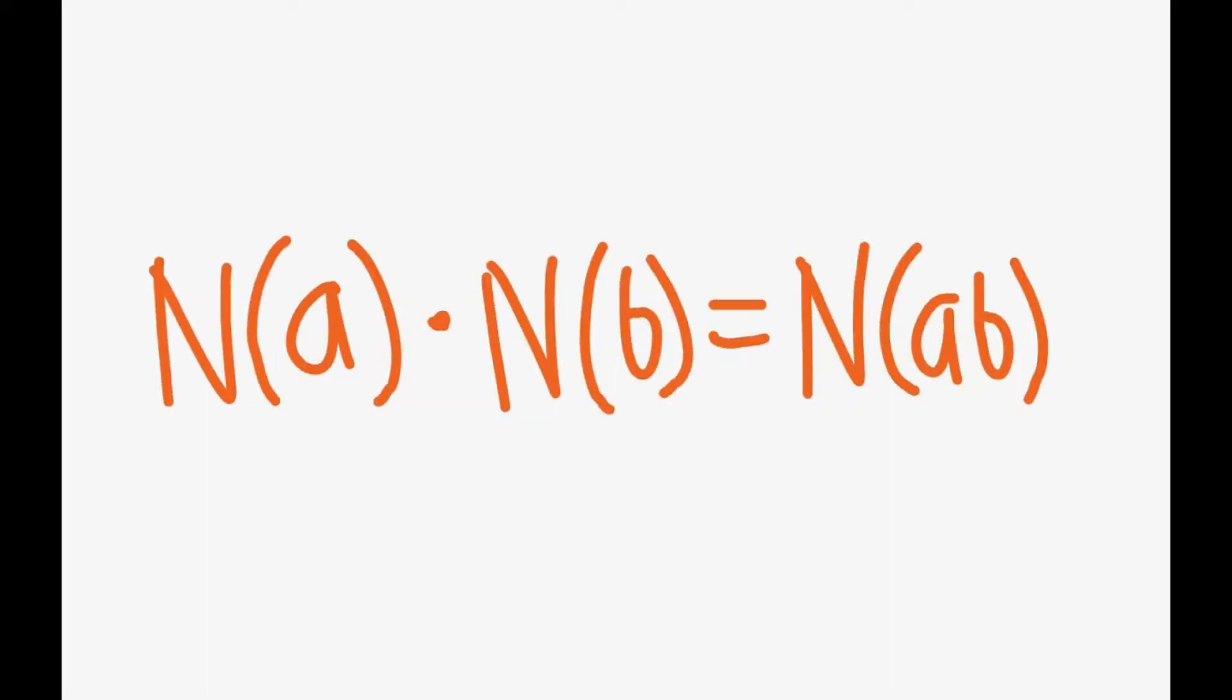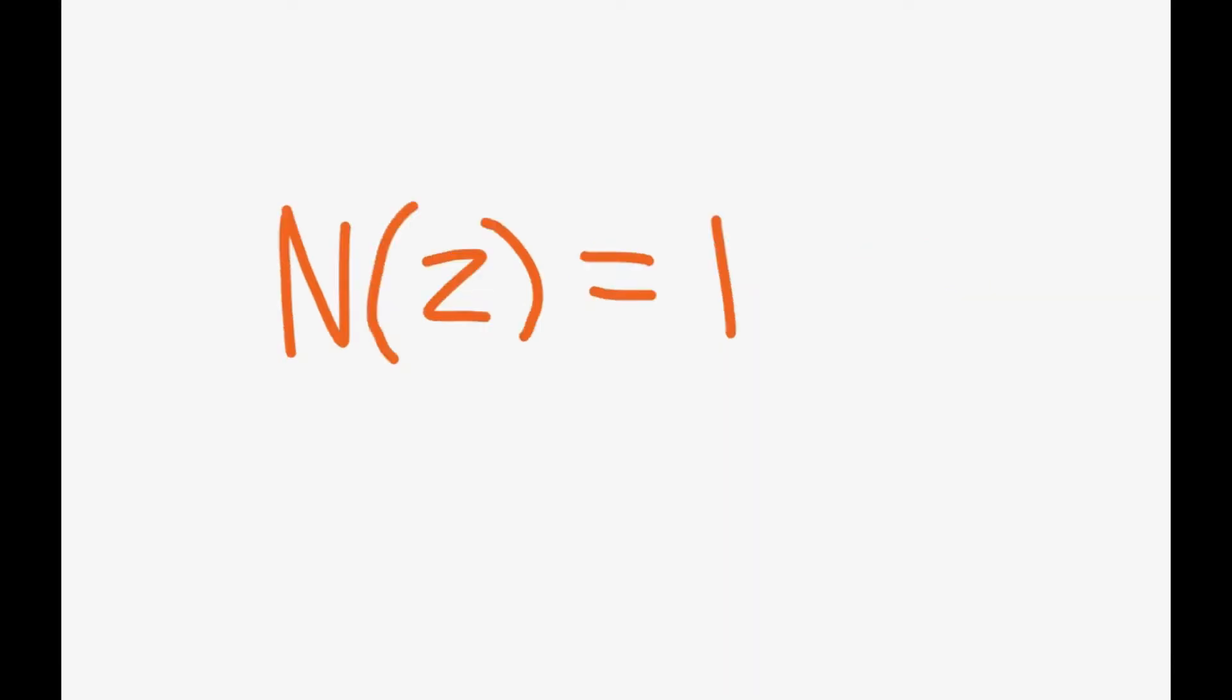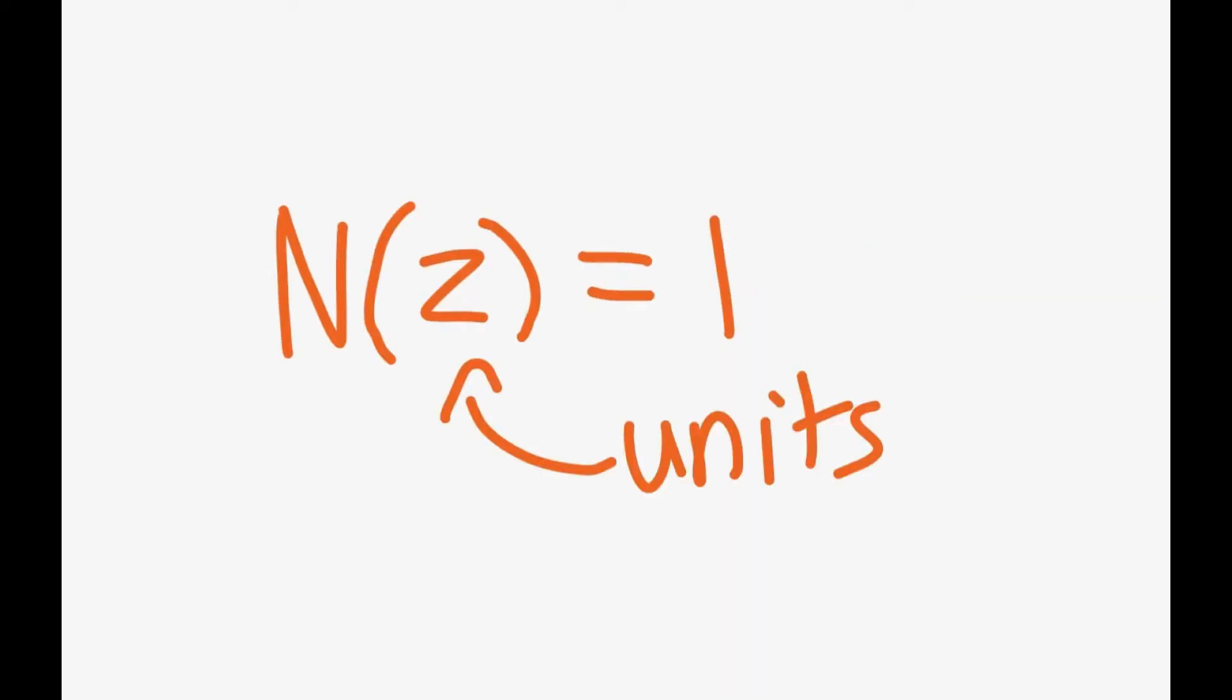It turns out that the norm is multiplicative, meaning the norm of a Gaussian number times the norm of another number is equal to the norm of those two numbers multiplied first. Notice that the only numbers that make the norm 1 are units. This will be important in the future.